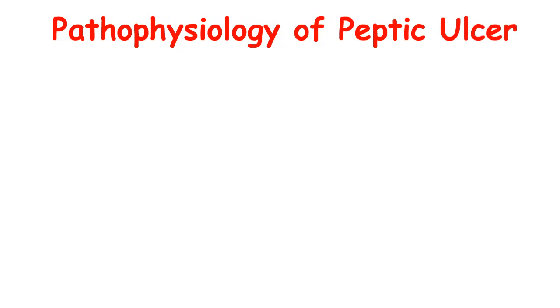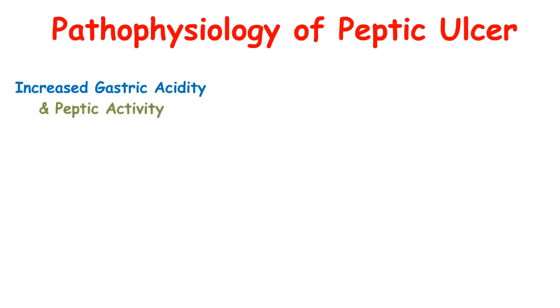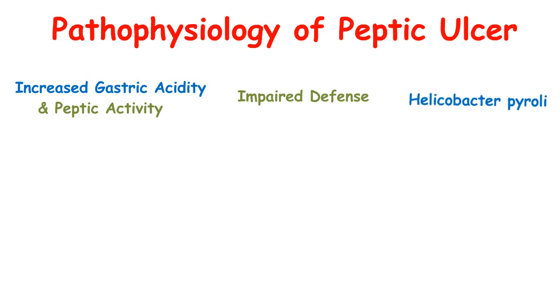Now moving to the pathophysiology of Peptic Ulcer. As we already know, if there is an imbalance between aggressive and protective factors, that condition leads to Peptic Ulcer. Increased gastric activity and peptic activity are the aggressive factors. With impaired defense, these aggressive factors cause damage to the gastric mucosa.